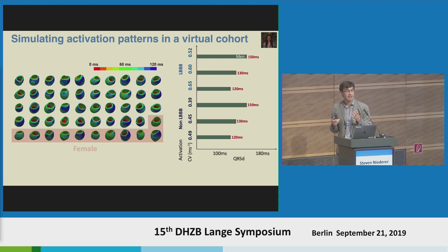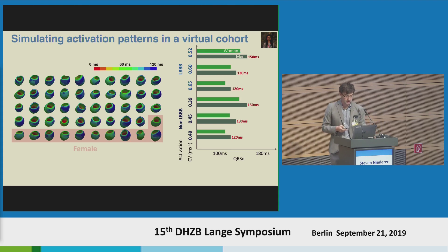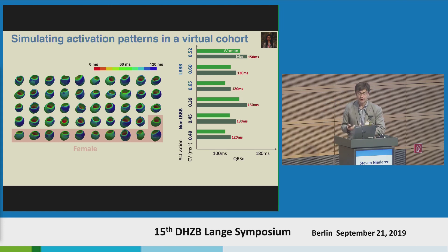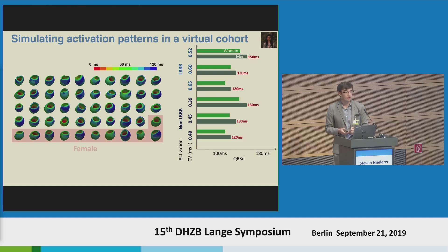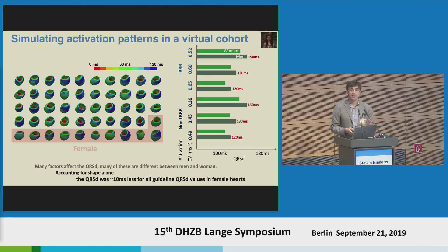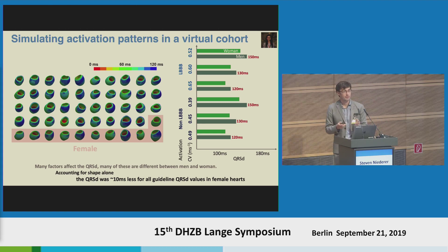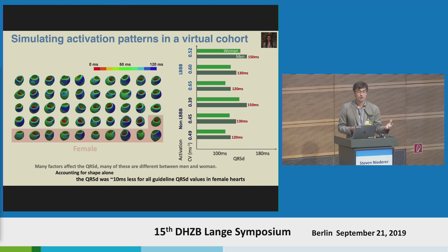We took these same pathologies and tissue properties and propagated them into female hearts to see what the change in QRS restoration was. That allowed us to estimate what the effect of anatomy alone might be on the difference in QRS restoration for male and female patients. While there are many factors affecting QRS, focusing on anatomy alone tends to show about a 10 millisecond decrease — identifying patients who might benefit but are currently not receiving any therapy.